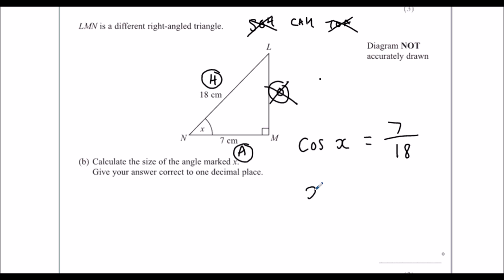And to get cos away from x, we shift cos, 7 over 18, and we type that into the calculator, and to one decimal place again, it's 67.1 degrees.